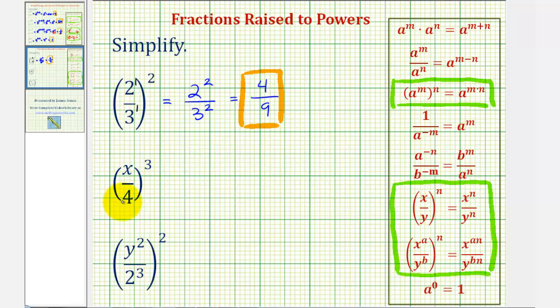So looking at our second example, it might be helpful to think of this as x to the first divided by four to the first raised to the third. And therefore, we have powers to powers, so we multiply the exponents. We'd have x to the power of one times three is three, divided by four to the power of one times three, or four to the third.